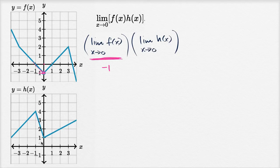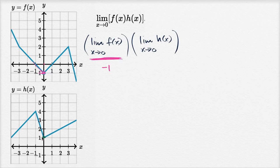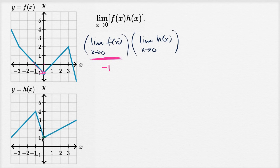For h(x) as x approaches zero, the function is defined at x = 0 and it looks like it equals one. The limit is also equal to one — as we approach from the left we get one, and from the right we also get one. This makes sense because h(x) is a continuous function, so the limit equals the value of the function at that point.